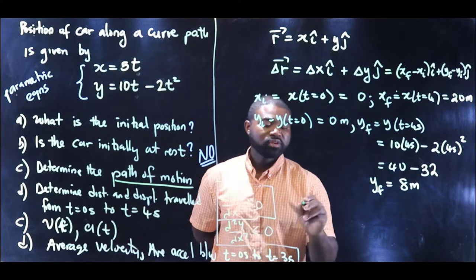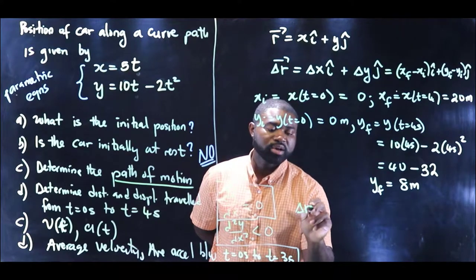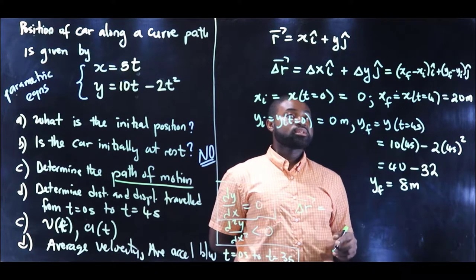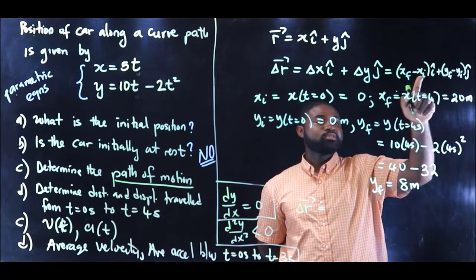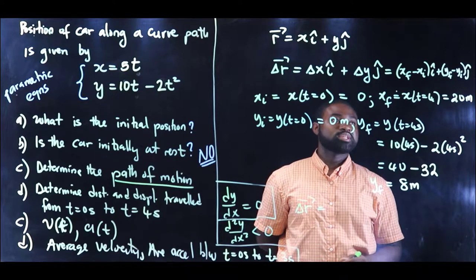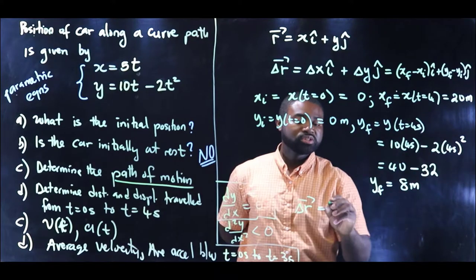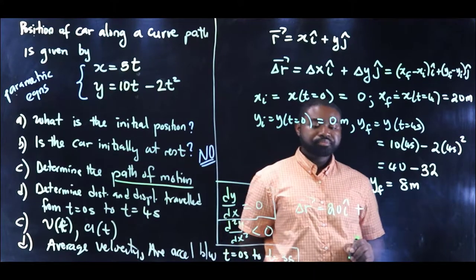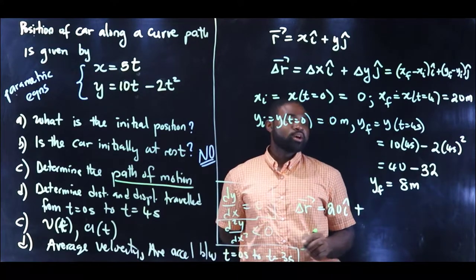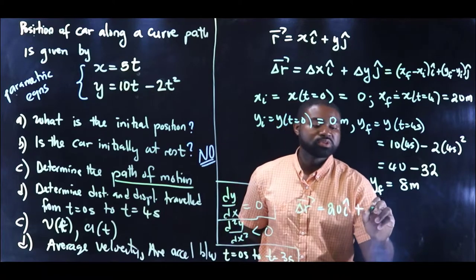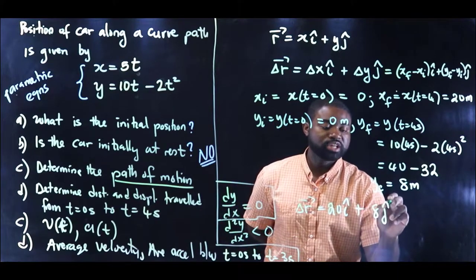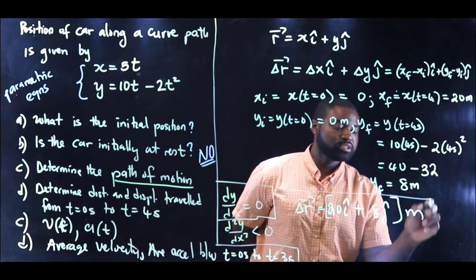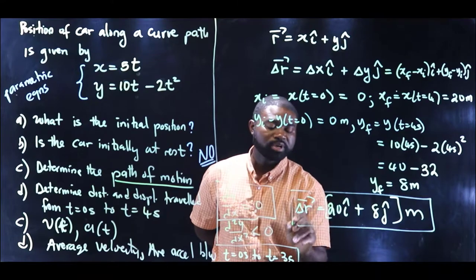This means that the displacement of the particle delta r will be equal to delta x, which is x final minus x initial. That is 20 minus 0, giving us 20i, plus y final minus y initial, which is 8 minus 0, giving us 8j meters. So the displacement is 20i + 8j meters.